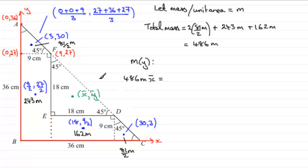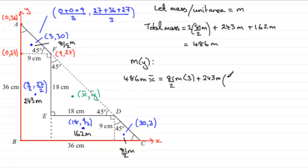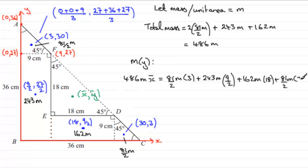The individual moments about the y-axis are: triangle 1 gives (81/2)M × 3; rectangle 1 gives 243M × (9/2); rectangle 2 gives 162M × 18; and triangle 2 gives (81/2)M × 30.